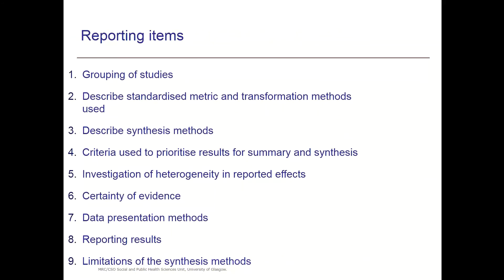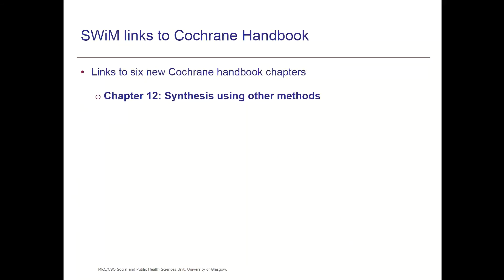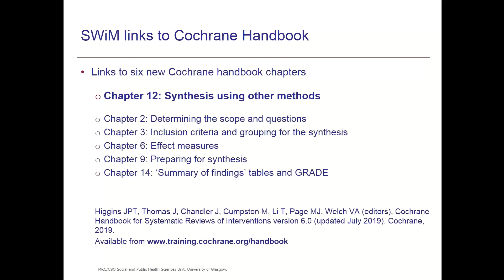So that's gone through all the reporting items. There's a lot more detail in the paper in the BMJ, where there's a detailed elaboration of what each item means and guidance on how you might interpret and apply it. There are also examples for each item — both clinical and non-clinical examples of how the reporting might look. The work here links quite closely to six new Cochrane Handbook chapters, in particular chapter 12, but also other chapters, which is about handling heterogeneous data and making decisions about grouping for synthesis. There are lots of resources on the Cochrane website to support you when doing reviews that involve these approaches.